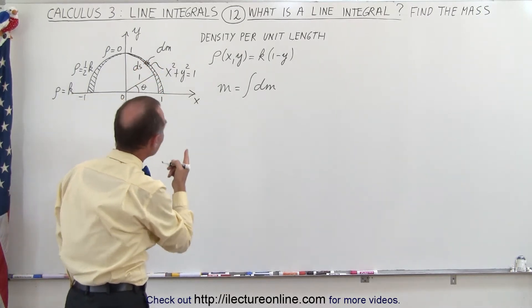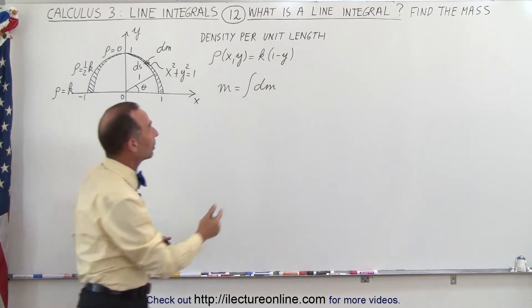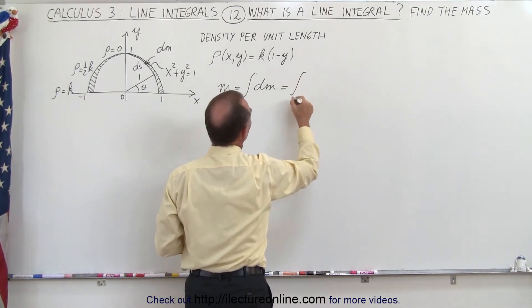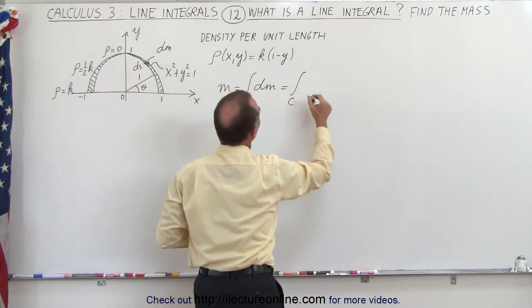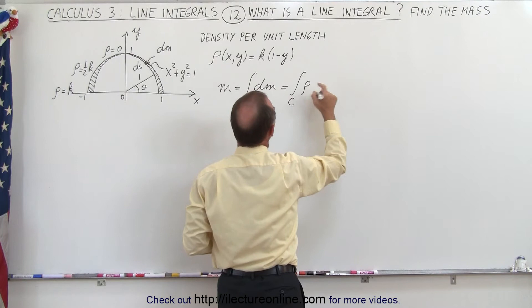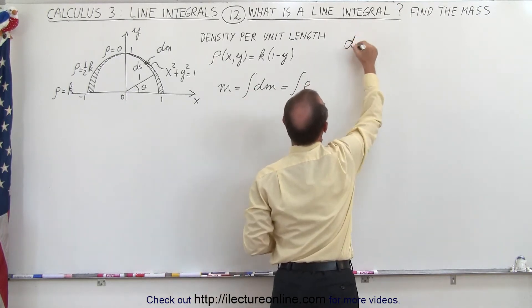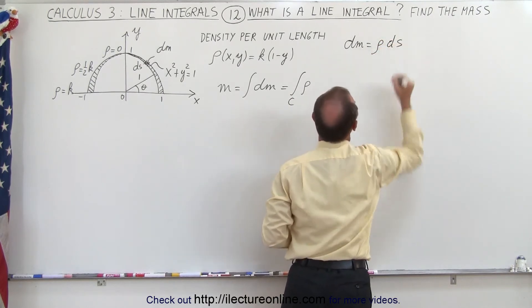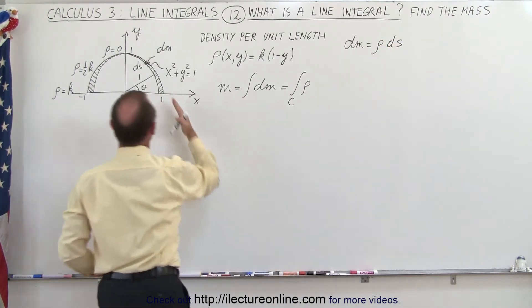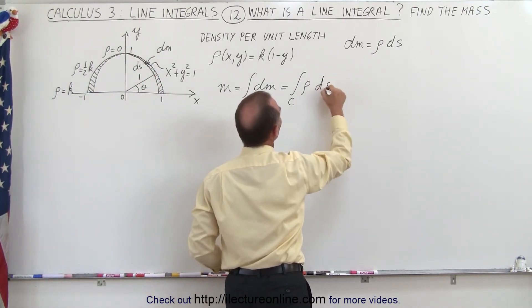And so what that means then is that this actually turns into what we call a line integral, because this can be defined as the line integral about a curve, and here's the curve that we're going to integrate at, of the density. And of course, how do we find dm? Well, dm can be defined as being the density times the length, which is going to be ds. It's going to be an arc length along this line right here. So it's going to be density times ds.